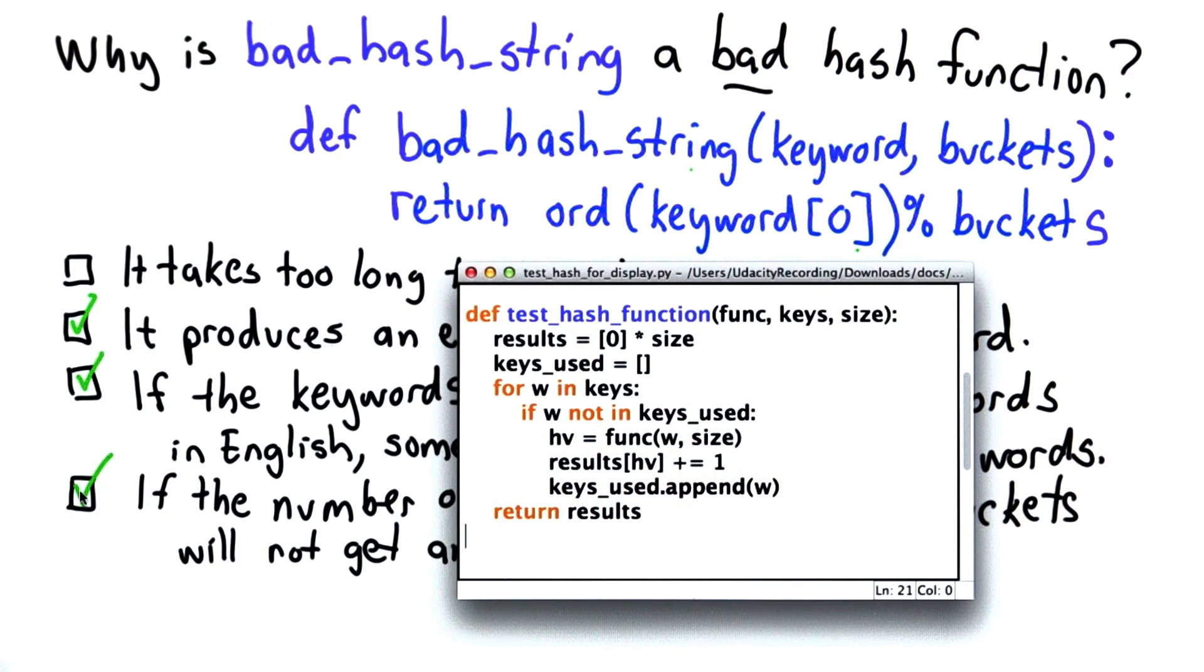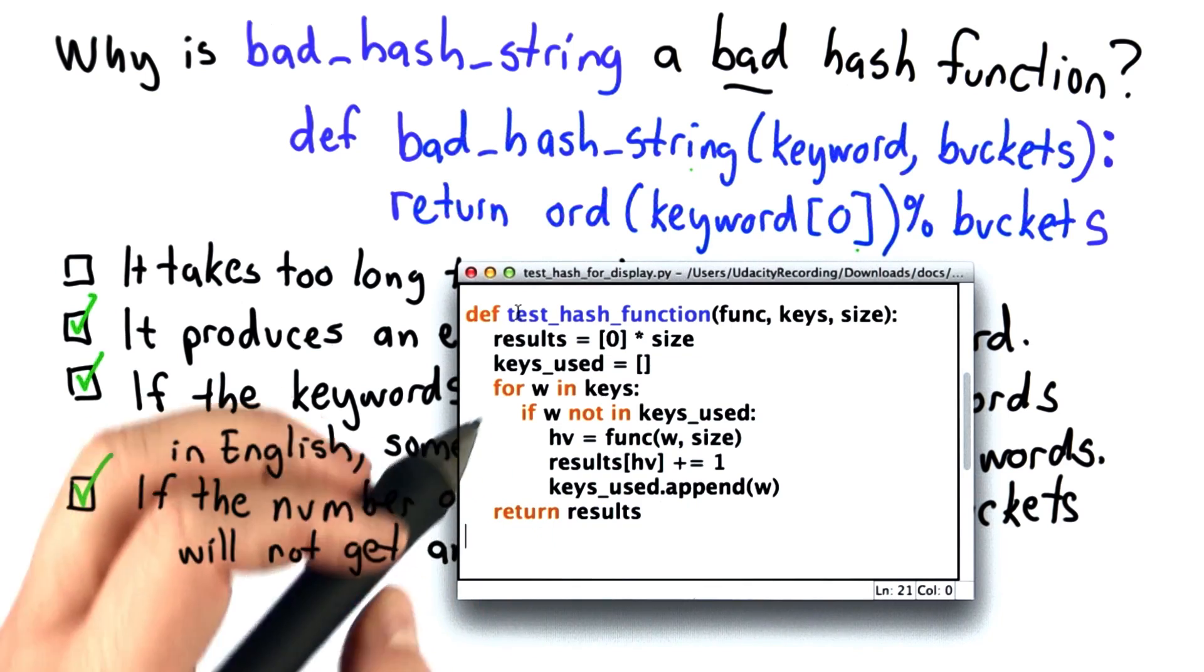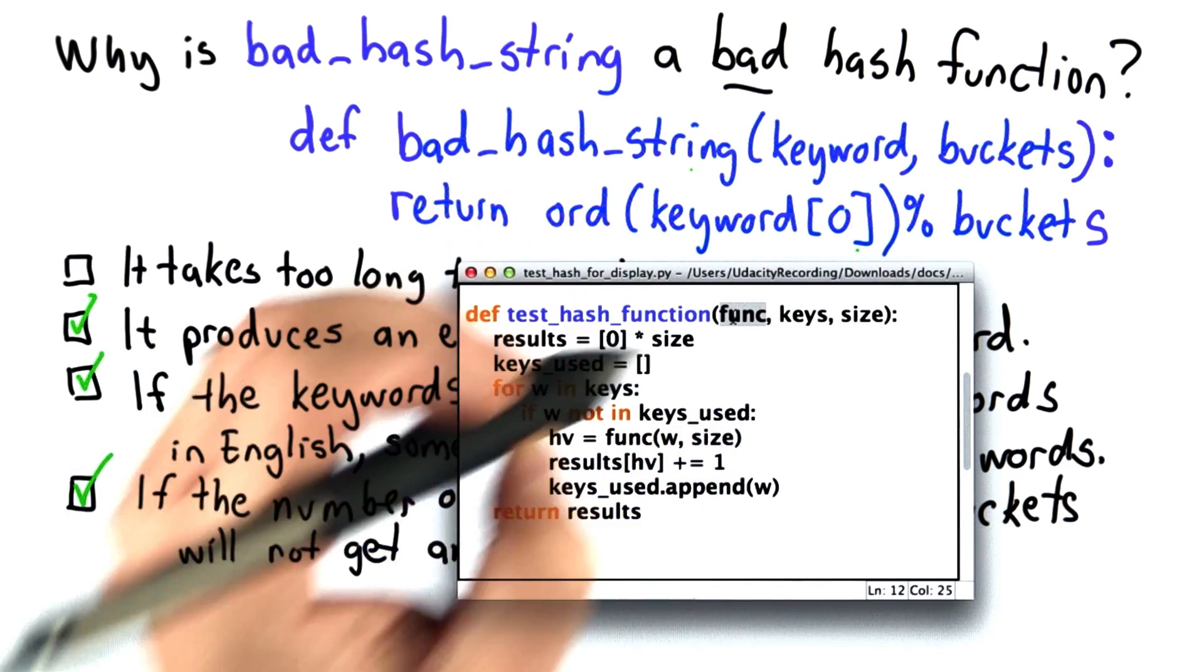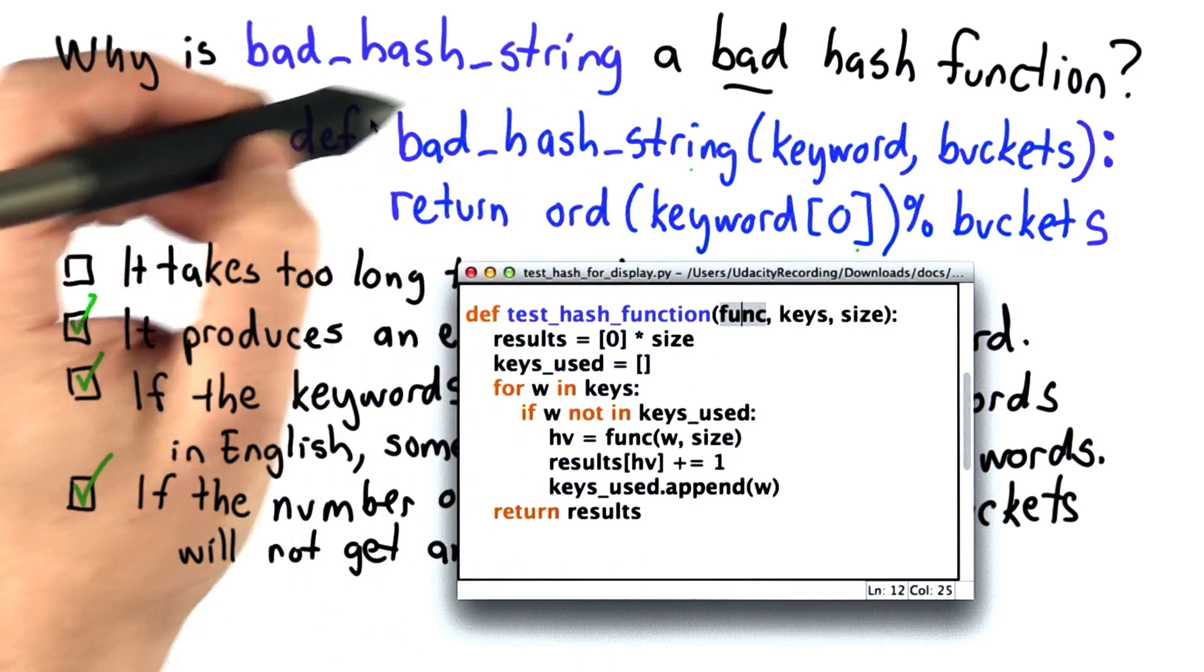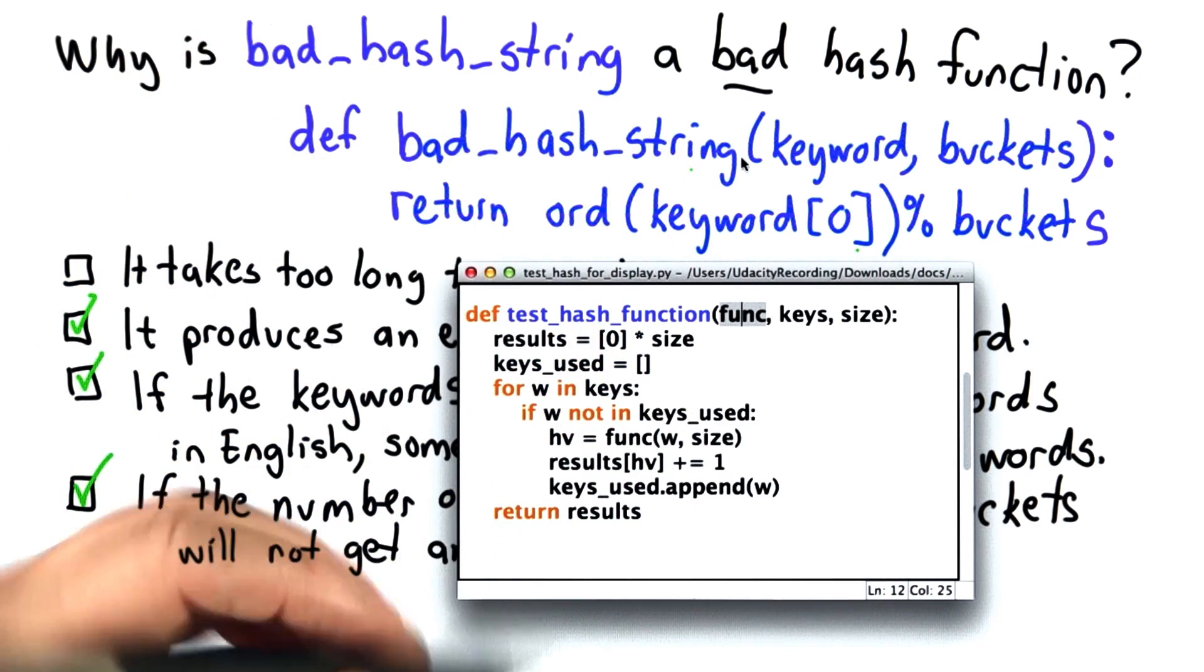So to understand the other two reasons, I've defined a procedure called test_hash_function. It takes three inputs. The first input is a function. So we can pass functions around just like any other value. So what we're going to pass in for this is the bad_hash_string function that we've defined, but we can also use it to test other hash functions, which we'll see later.